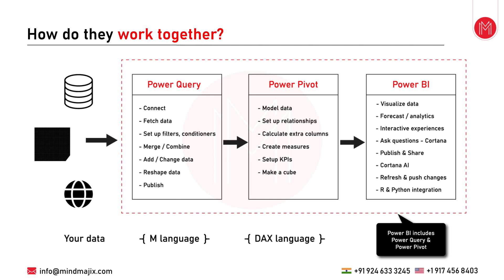As you can see on the screen, this diagram shows the data flow. Data can come from multiple formats and multiple sources. Once that data is brought into Power Query, you can connect, fetch, and set up filters or various conditions on that data. Power Query is essentially used for ETL purposes — Extract, Transformation, and Loading. In the transformation phase, you can perform operations such as merge, combine, add or delete rows or columns, reshape the data, and publish it.